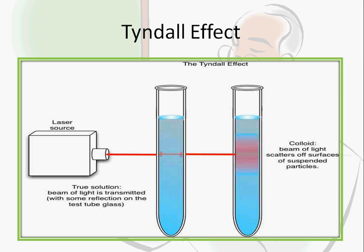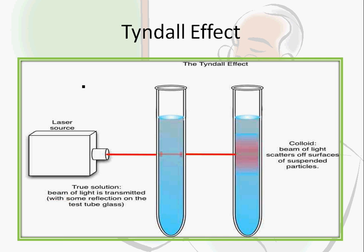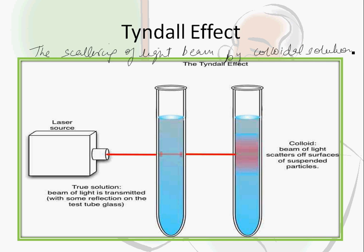The path of light inside the colloidal solution becomes visible because the solute particles in the colloidal solution are big enough to scatter the light rays falling on them in all directions. This scattered light enters our eyes, allowing us to see the path of the light beam inside the colloidal solution. This scattering of light by colloidal particles is called the Tyndall effect. The definition is: the scattering of a light beam by a colloidal solution is the Tyndall effect.